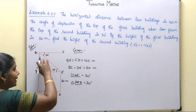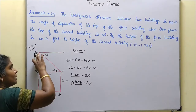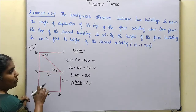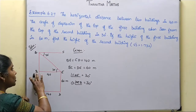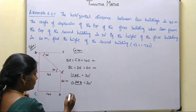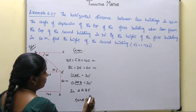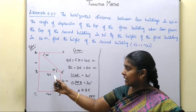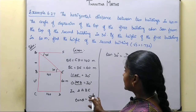In triangle ABE, AB is the opposite side and BE is the adjacent side, which is 140m. Using tan θ = opposite/adjacent, we get tan 30° = x/140, where x is the difference in height between the two buildings.